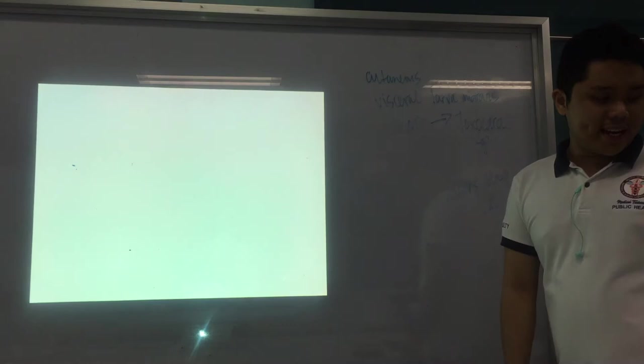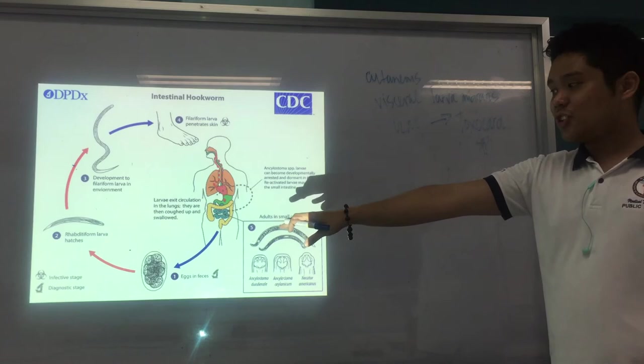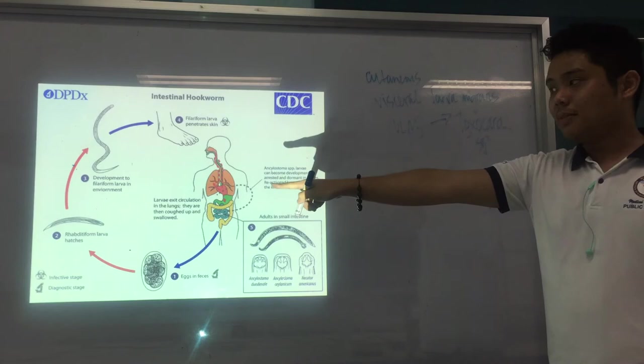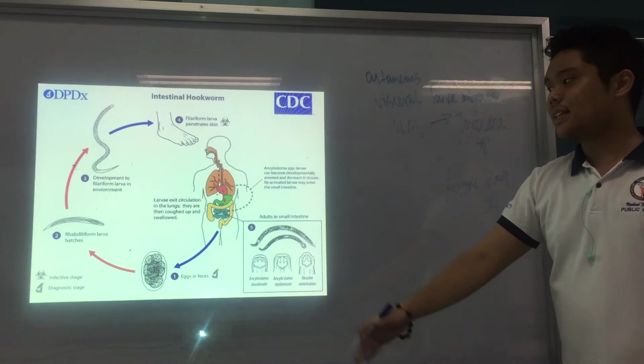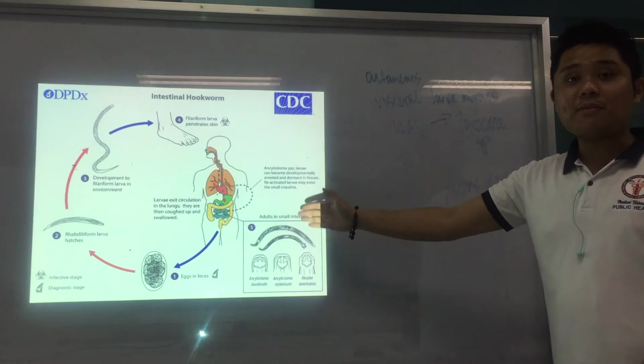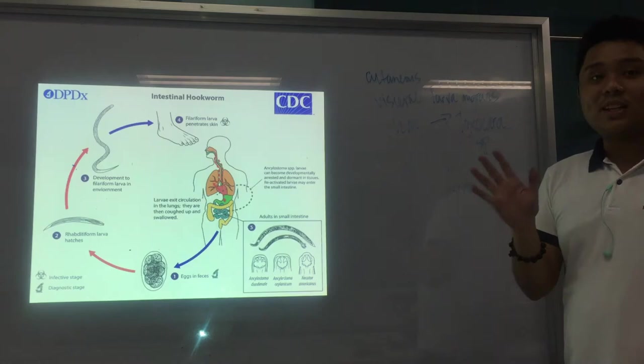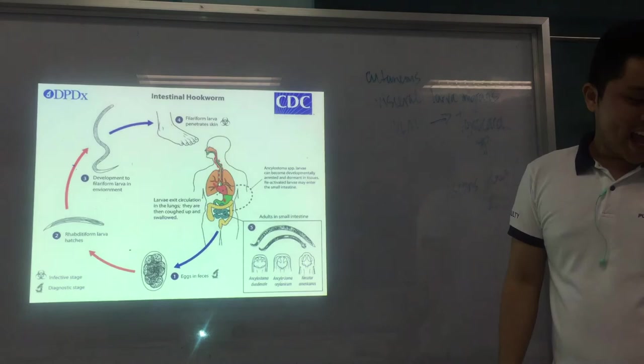For the hookworm life cycle: eggs hatch on the soil first as L1 or rhabditiform larva, then develop into the filariform larva in the environment. If you walk barefoot, the filariform larva penetrates the skin and causes infection. Specific activities for hookworm identification will be covered later in the course.